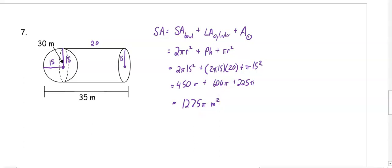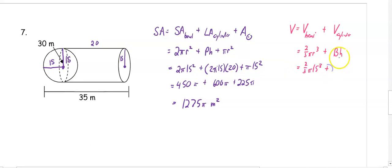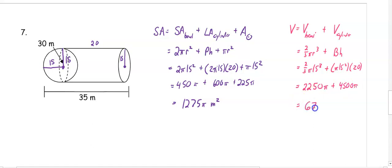For the volume, it's easier — we just look at the exact shapes: the volume of the hemisphere plus the volume of the cylinder. The volume of a hemisphere is 2/3πr³ and the volume of the cylinder is base area times height. So we have 2/3π(15³) plus π(15²)(20), which gets us 2,250π plus 4,500π. Our volume is 6,750π meters cubed.